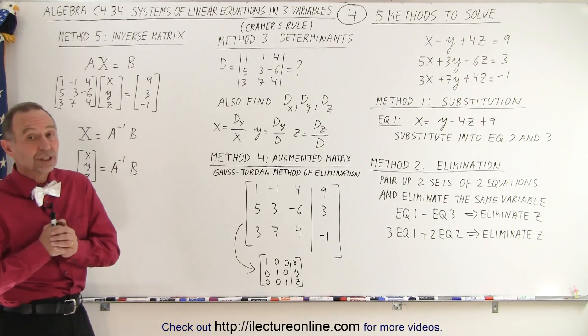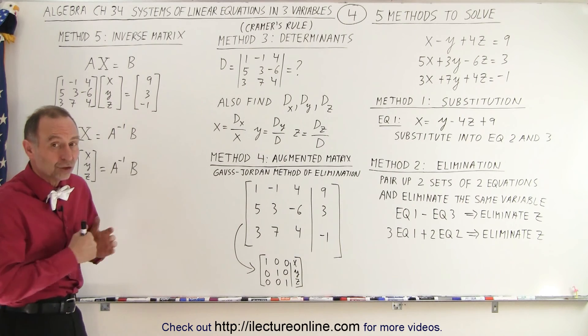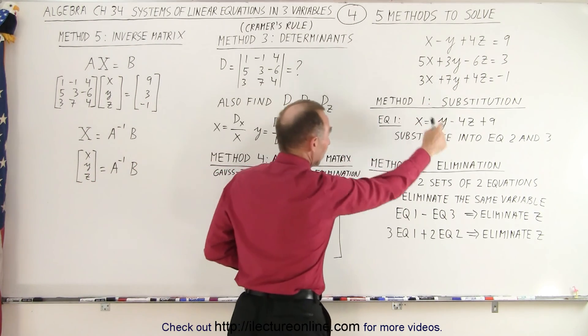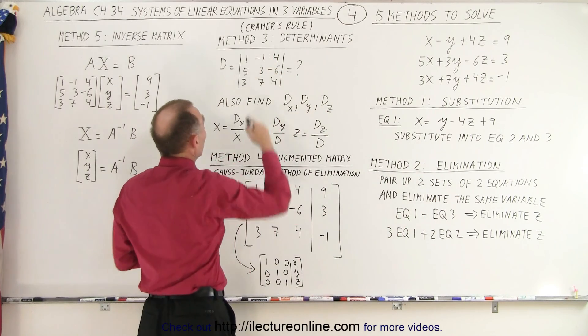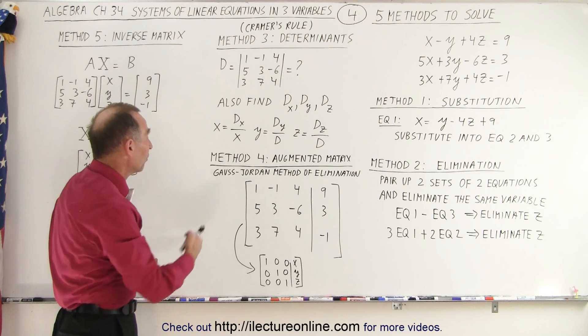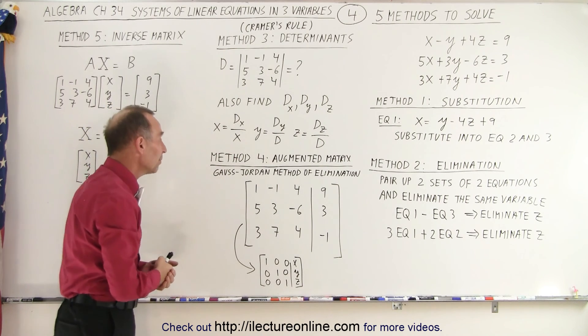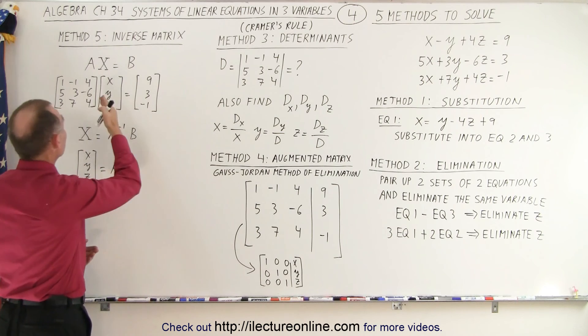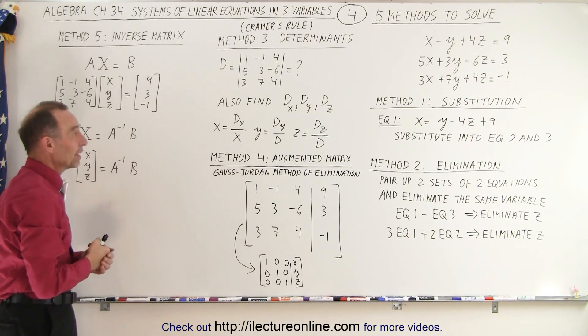There are five different methods that we're going to cover in these videos in this particular chapter. The five methods are substitution, elimination, something what we call Cramer's rule, which I call using determinants. Method four is the augmented matrix method, also known as the Gauss-Jordan method of elimination. And the fifth method is using the inverse matrix method.